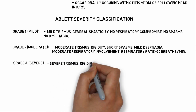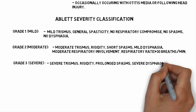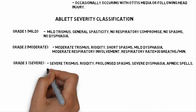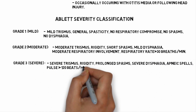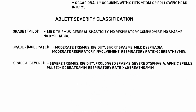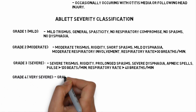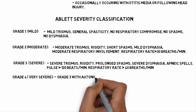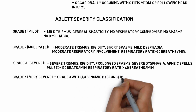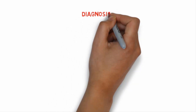For Grade 2, respiratory rate is more than 30 breaths per minute. Grade 3, which is severe, presents with severe trismus, rigidity, prolonged spasms, severe dysphagia, apneic spells, pulse more than 120 beats per minute, and respiratory rate increased to more than 40 breaths per minute. Grade 4, which is very severe, is Grade 3 with autonomic dysfunction.